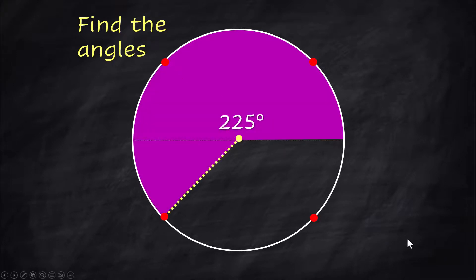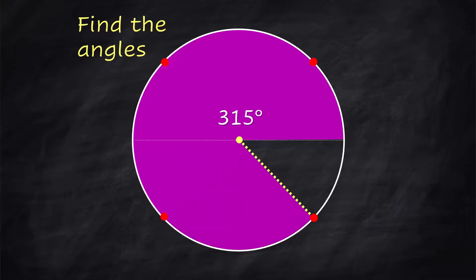The third one, down in quadrant 3, will be 225 degrees, and for this one, you want to think 180 degrees plus 45 degrees. The fourth one in quadrant 4 will be 315 degrees, and for this one, you want to think 360 minus 45 degrees.